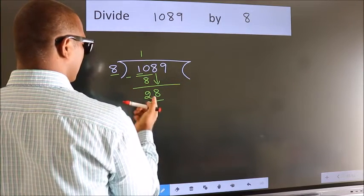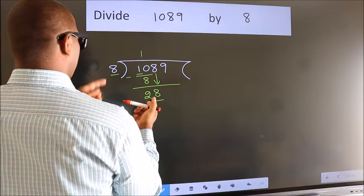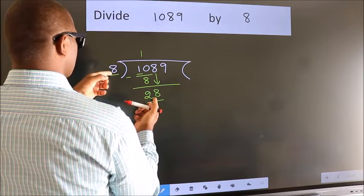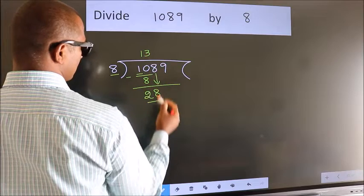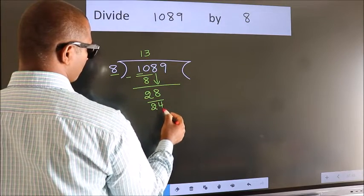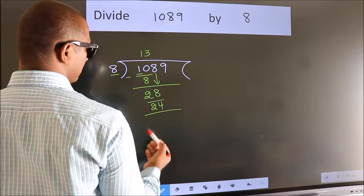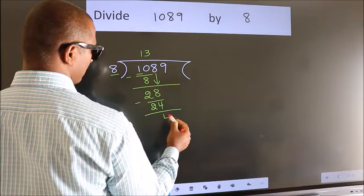So 28. A number close to 28 in 8 table is 8 threes, 24. Now we subtract. We get 4.